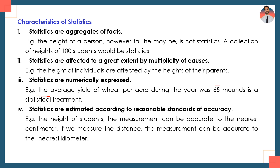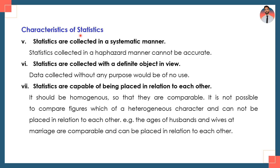The fifth characteristic: statistics are collected in a systematic manner. Statistics collected in a haphazard manner cannot be accurate — every information about any characteristic should be explained systematically. The sixth characteristic: statistics are collected with a definite object in view. Data collected without any purpose would be of no use.